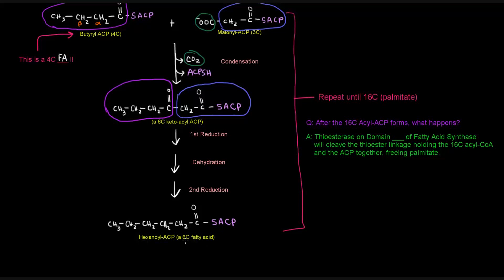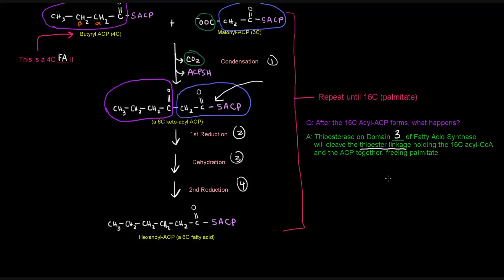These four steps continually repeat, each time incorporating a new malonyl-ACP, until we reach the 16 carbons needed for palmitate. Once we have the 16-carbon acyl-ACP, the thioesterase on domain 3 of fatty acid synthase cleaves the thioester linkage holding the palmitate to the ACP. Palmitate is then free, floating in the cytosol, and will likely be used to produce fats. Hope that video was helpful — thank you for watching.